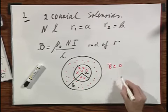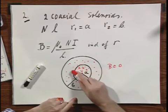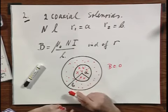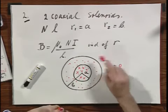And the B here we assume to a good approximation is zero. And the B outside this one is also zero due to the current of the inner solenoid, not due to the current of the outer solenoid.